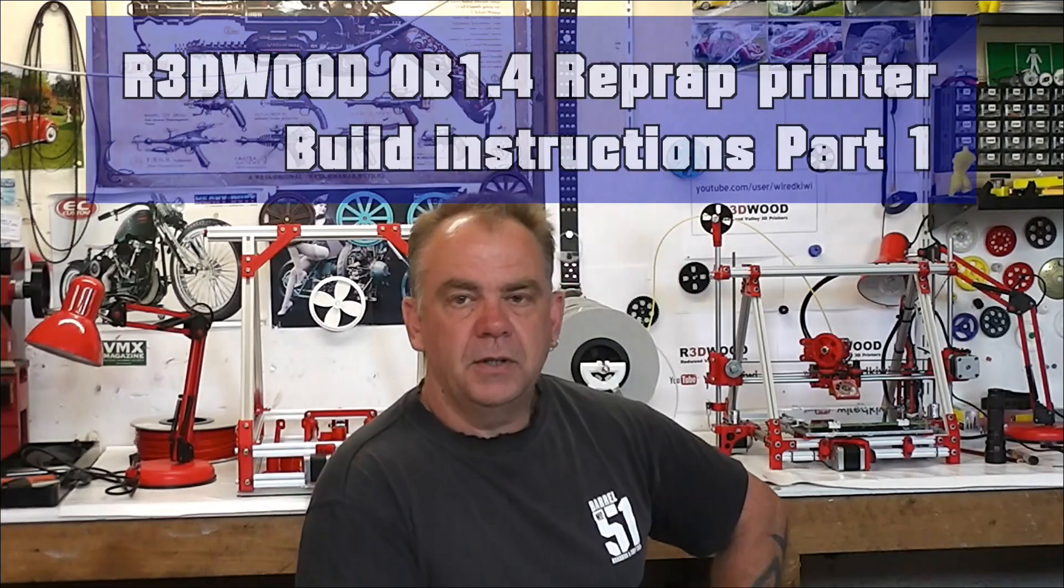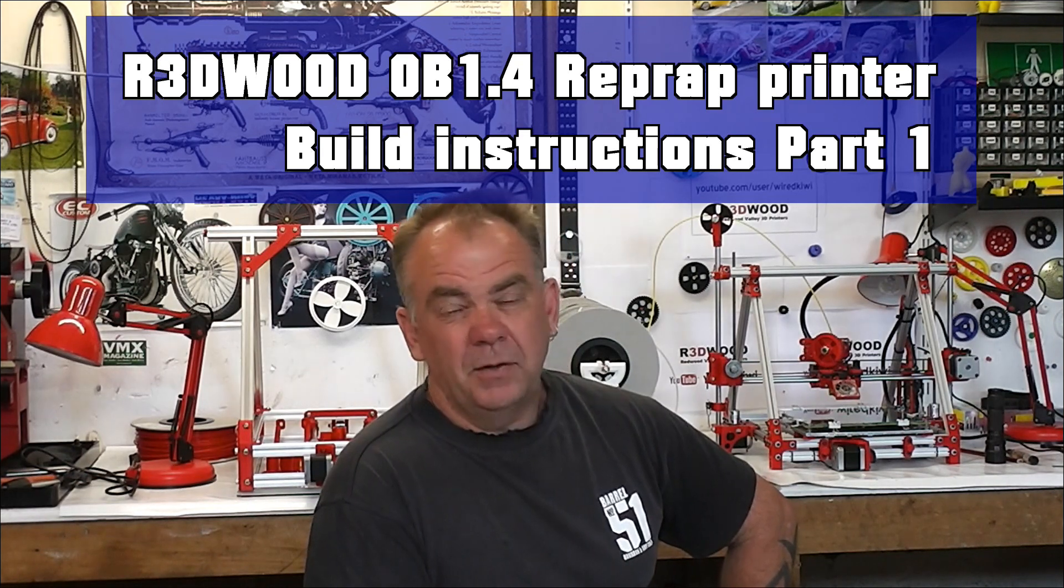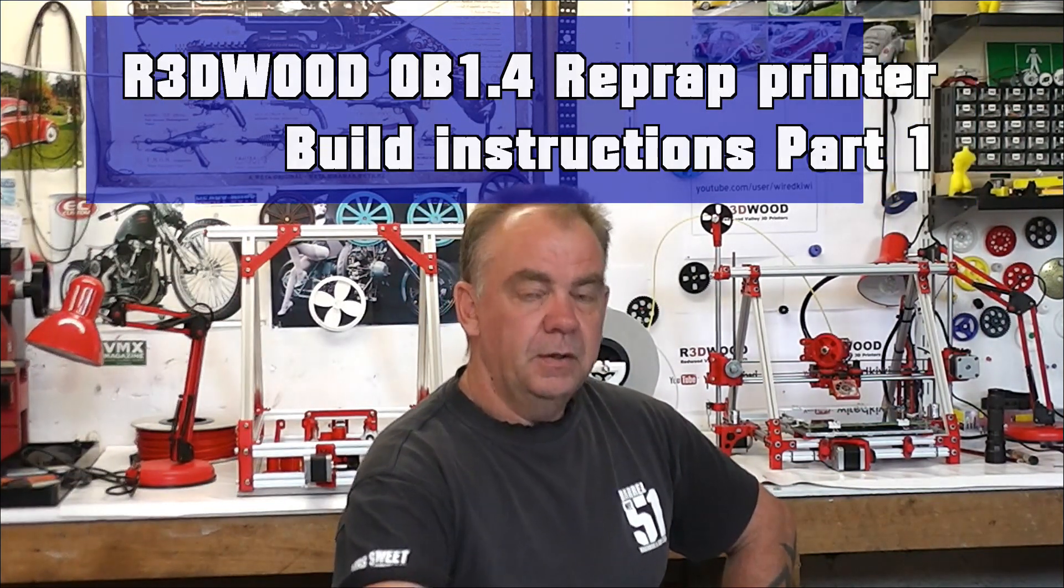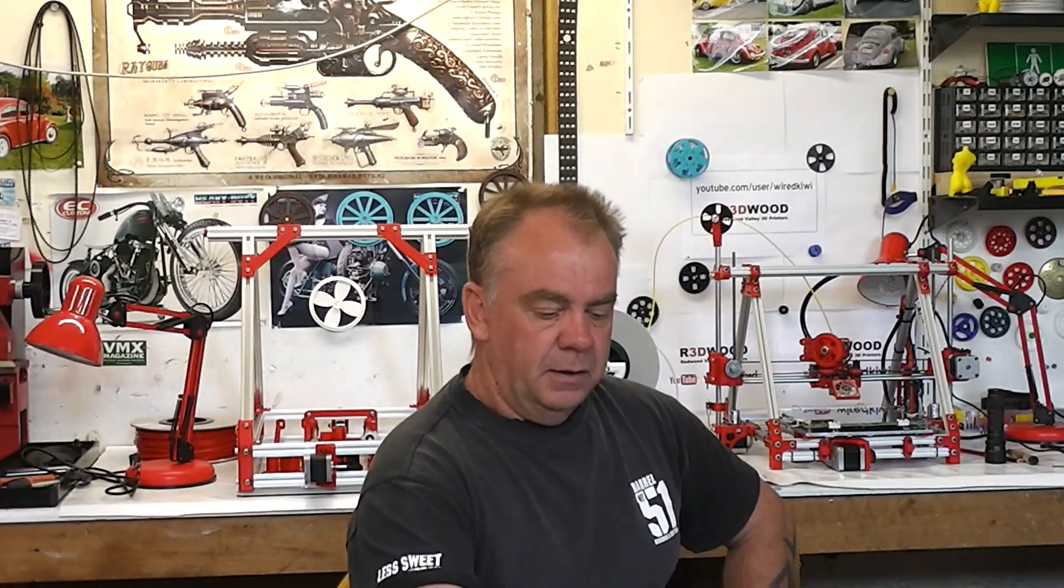G'day, this video is showing how to put together my new printer, the OB 1.4, which was based on my first print of the OB1 which uses this 15 by 15 aluminum extrusion. The advantages of the 1.4 is that it's got a better build height and a bit more room for the extruder.